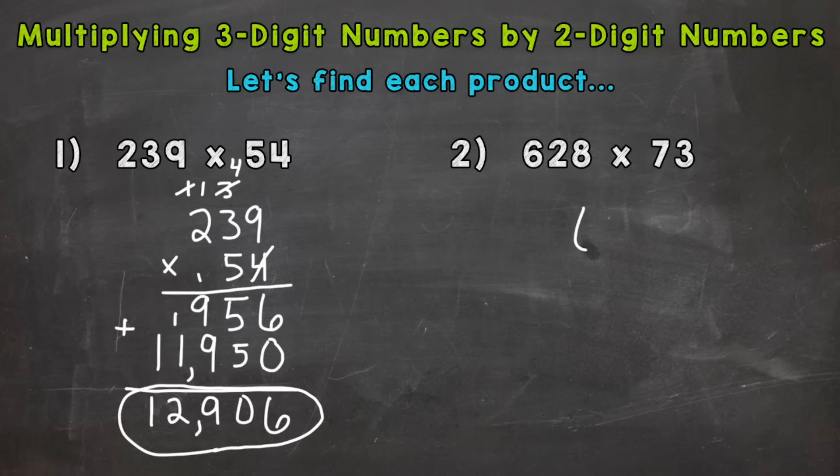First thing we set the problem up, 628 times 73. So we need to do three times 628 and then 70 times 628. Add those answers together to get our final answer. So 3 times 8 is 24, carry our two. 3 times 2 is 6 plus 2 is 8. 3 times 6 is 18.